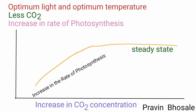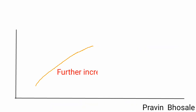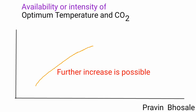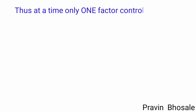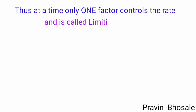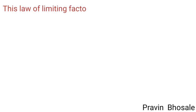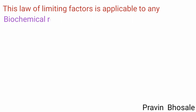Further increase is only possible if the availability or intensity of light increases. Thus, at any one time, only one factor controls the rate and is called the limiting factor. This Law of Limiting Factor is applicable to any biochemical reaction.